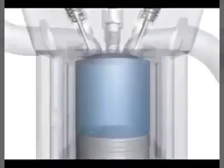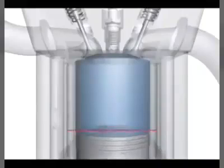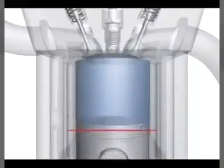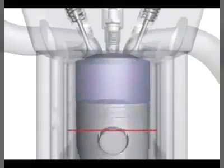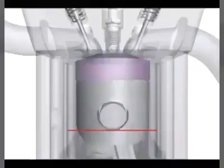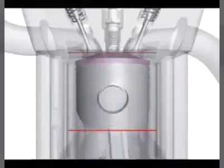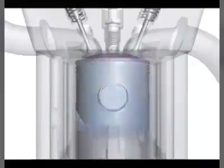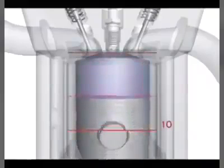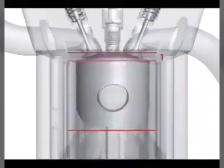Two terms you may be asked to explain to customers are the engine's compression ratio and displacement. Compression ratio is the ratio between the total volume of a combustion chamber and cylinder when the piston is at the bottom of its stroke and when the piston is at the top of its stroke. In this example, the compression ratio is 10 to 1.